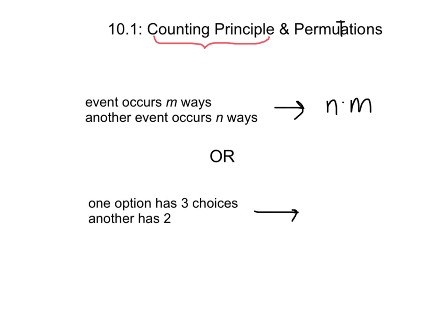Or, more specifically, if one option has three choices and another has two, to find the total number of choices we have, we multiply 2 by 3.